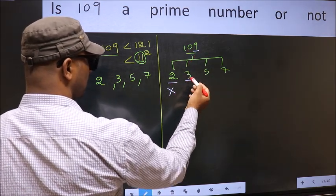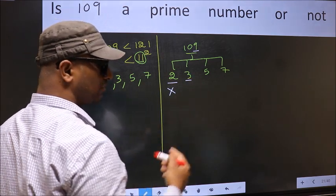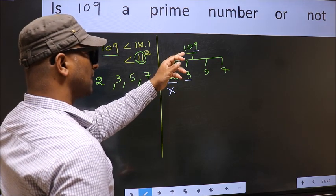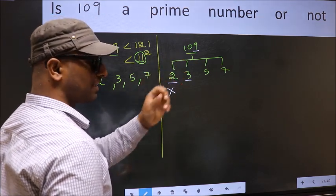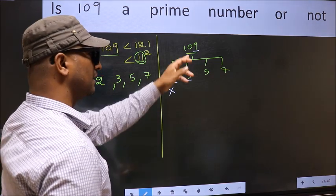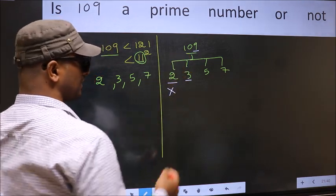Next number 3. To check divisibility by 3, for that add the digits. 1 plus 0 plus 9, we get 10 and 10 is not divisible by 3. So this number also not divisible by 3.